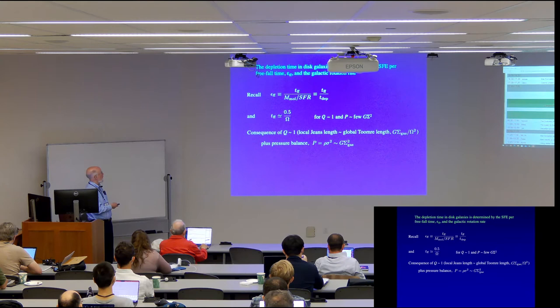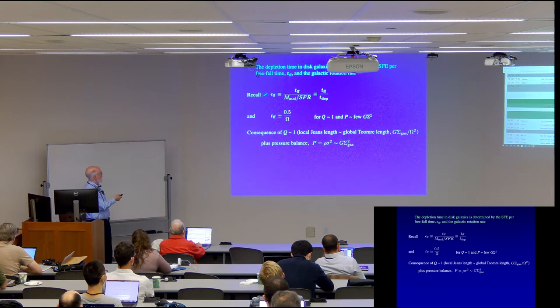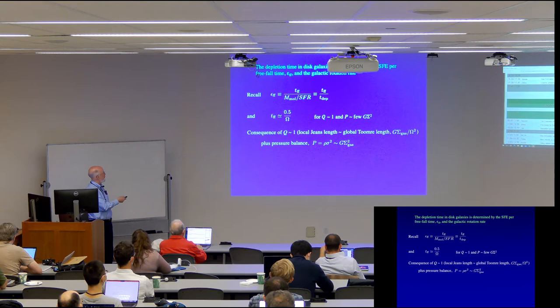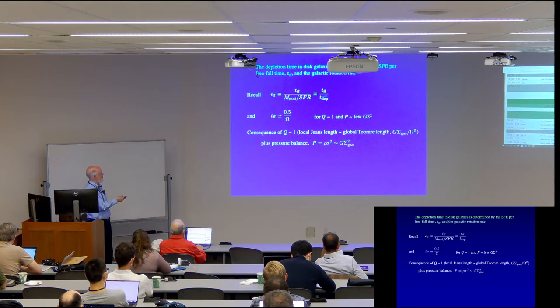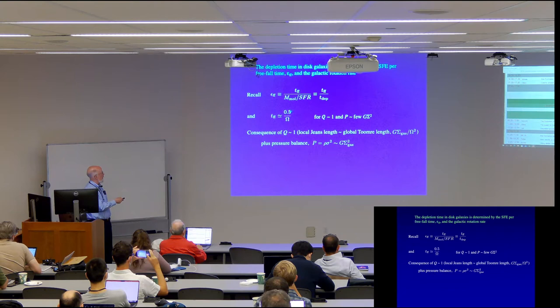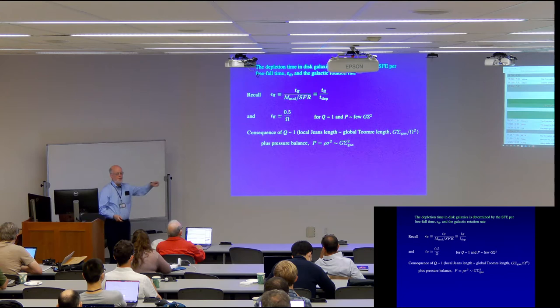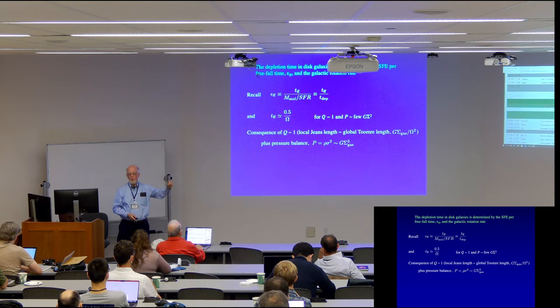So the depletion time in disk galaxies is determined then by the star formation efficiency per freefall time and the galactic rotation rate. So to show that, just recall that the star formation efficiency per freefall time can be expressed this way, which is, as we saw before, just the freefall time divided by the depletion time. So this freefall time is very small compared to the depletion time, and this efficiency is small. We just showed that the freefall time goes like half divided by the galaxy rotation rate. And so this relation here is, you can ask, why is it that you have this quantity here? The freefall time is something you measure locally in the gas. You go out in the middle of the disk of a galaxy and you look at the density and you say, ah, that's what the density is. I've now locally measured this freefall time.